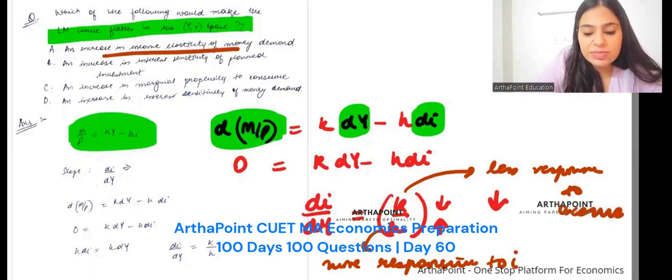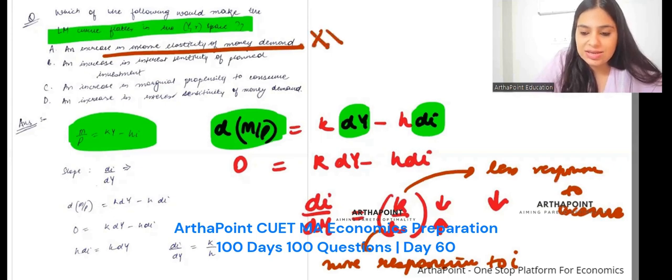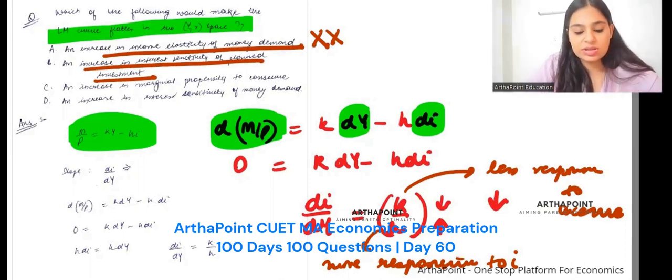Increase in income elasticity. No, no. With income we want less effectiveness. Increase in interest of planned investment. Yes, we want there should be increase in the interest sensitivity.